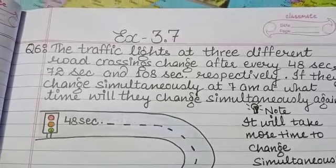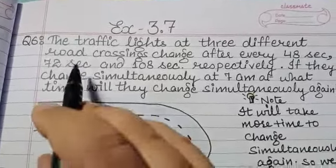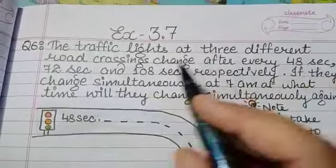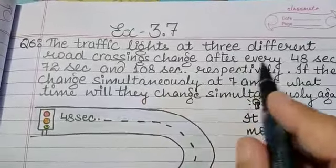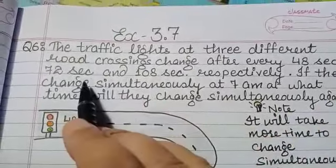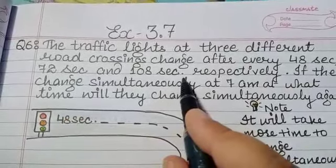Exercise 3.7, Question number 6. The traffic lights at three different road crossings change after every 48 seconds, 72 seconds, and 108 seconds respectively.